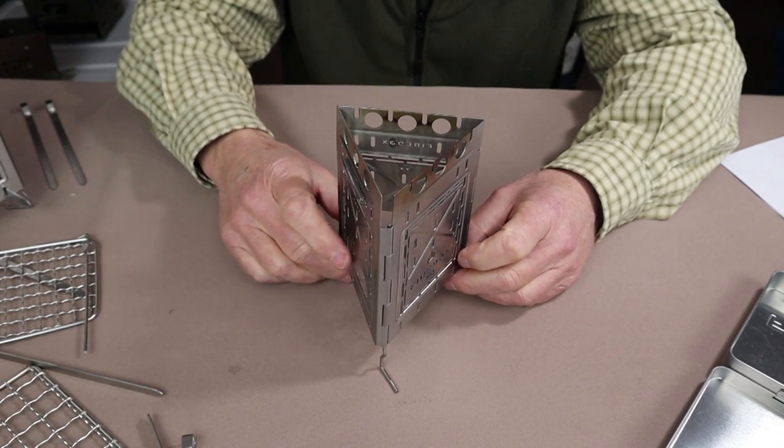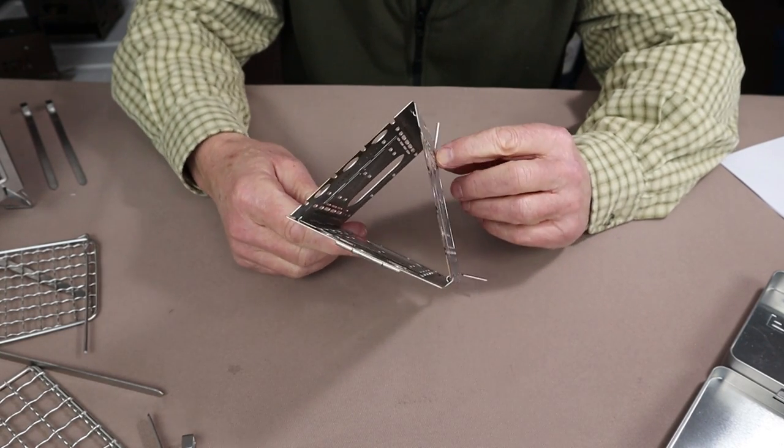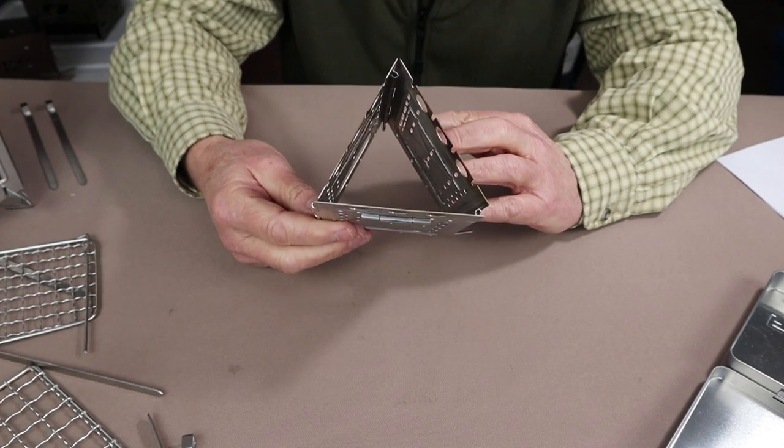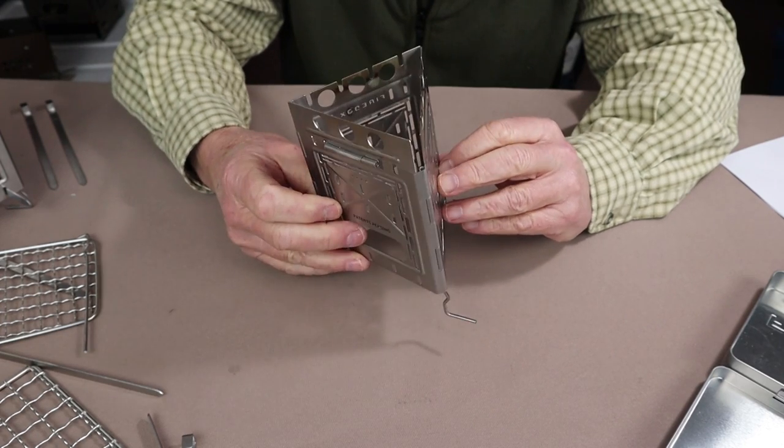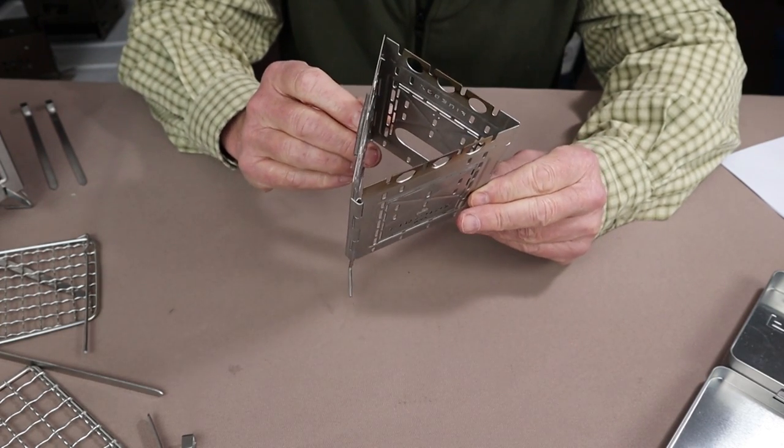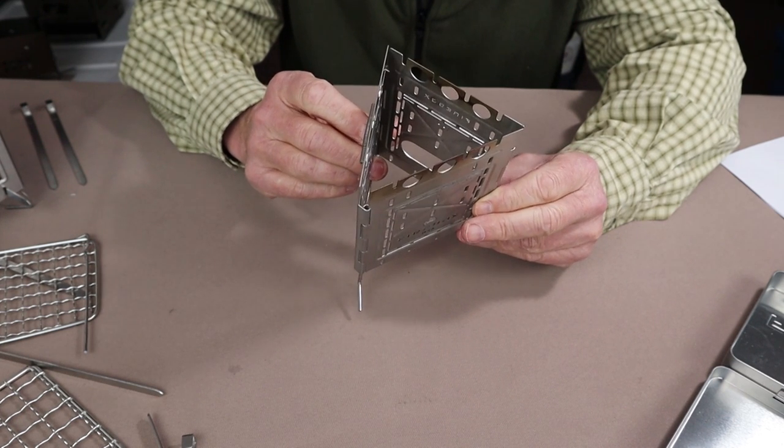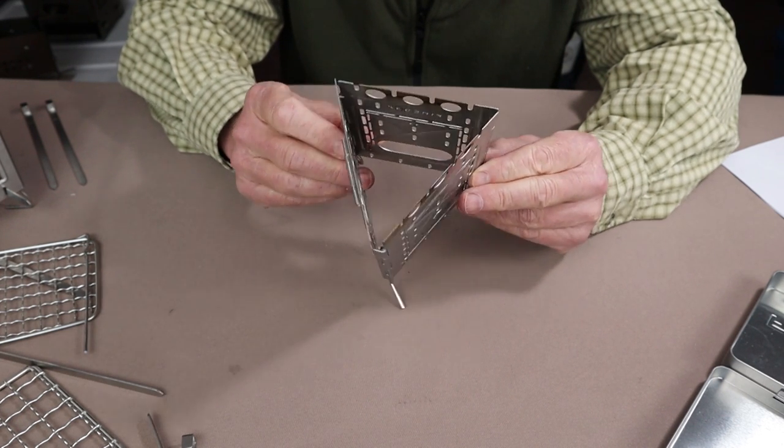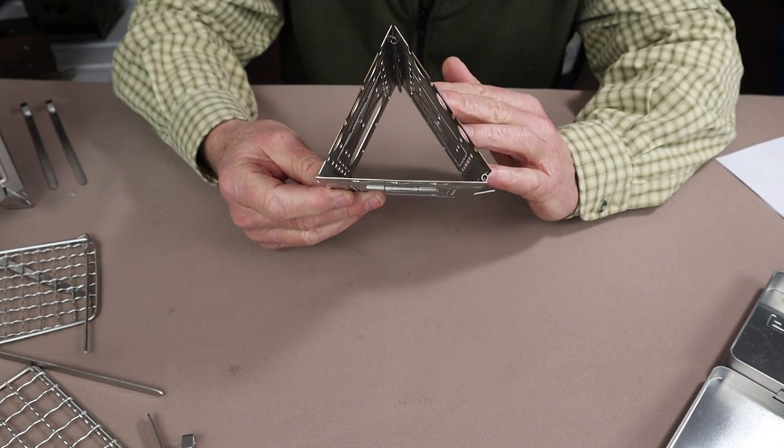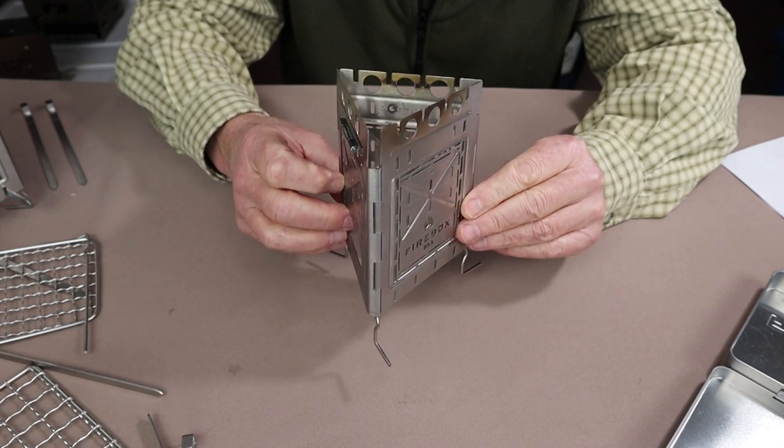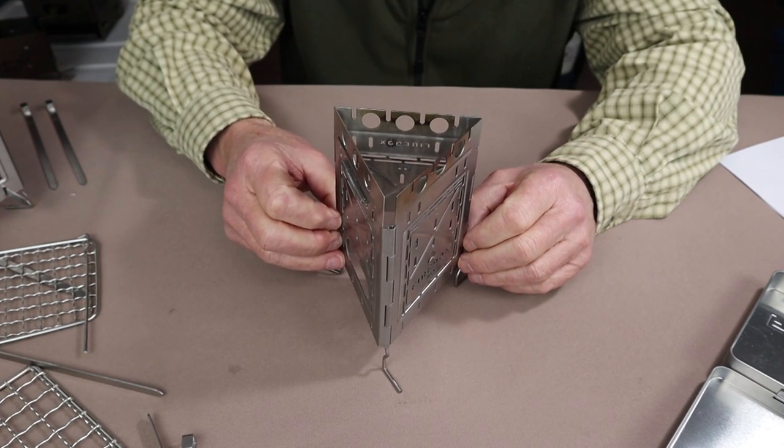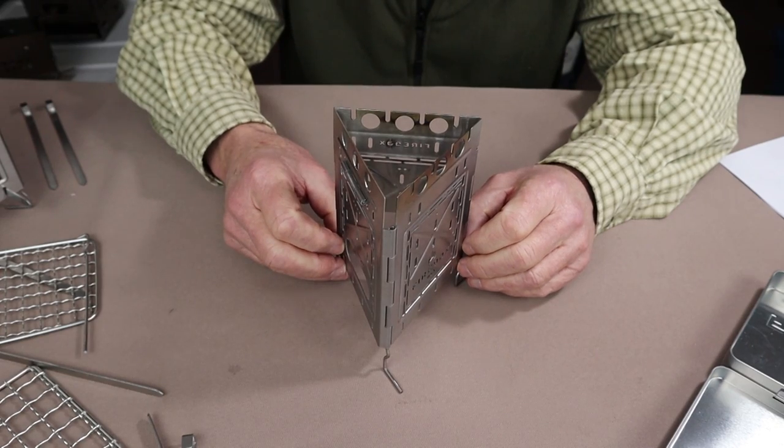I don't have one of the Toaks siphon stove to demonstrate that with to you. I do have the Lixada version of that stove, but it is just slightly larger than the Toaks and won't fit in this configuration. All right. So what I'll do now is I'll go up to the first of the two six-sided configurations.